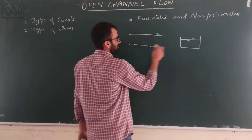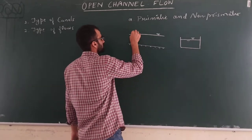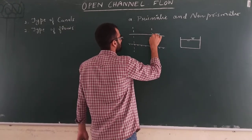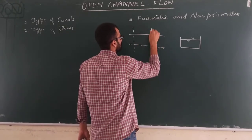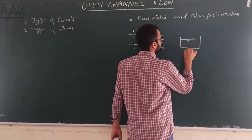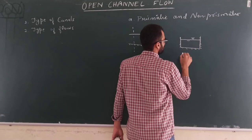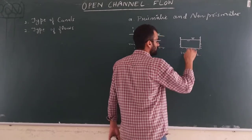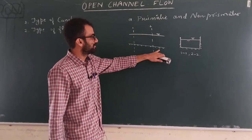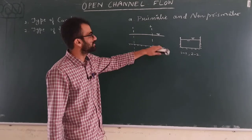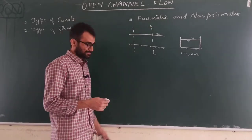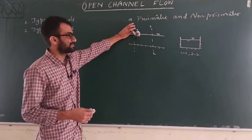The cross section should not change. If you take a cross section at location 1-1 and at location 2-2, some other location, the cross section should not change between 1-1 and 2-2. The geometry of the channel should be the same. Also, the slope should be constant throughout the channel. These types of channels are called prismatic channels. Generally, manmade canals will be categorized as prismatic channels.